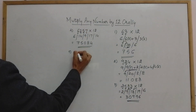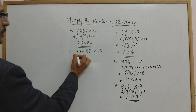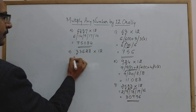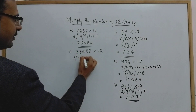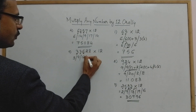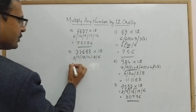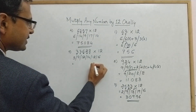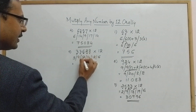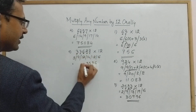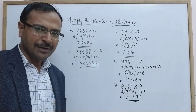Fifth example: 33628 × 12. Starting with 3: double of 3 plus 3 = 9; double of 3 plus 6 = 12; double of 6 plus 2 = 14; double of 2 plus 8 = 12; double of 8 = 16. Writing the answer: 6, then 12 + 1 = 13 gives 3; 15 gives 5; 13 gives 3 with carry; 10 gives 0 with carry; and 4. So the answer is 403536.